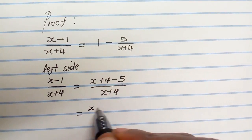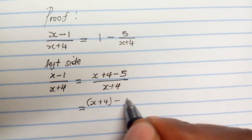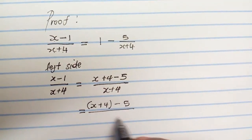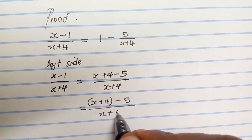So this is what you do is x plus 4, you group it together, then you minus 5, then this is all over x plus 4.